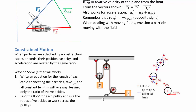Once you have that information, you work through the ICZV rules. If you know two points of velocity on a body, draw lines tip-to-tip and tail-to-tail — those two lines will intersect at the ICZV. For fixed-axis rotation pulleys, this is easy to see because that point is always in the center.